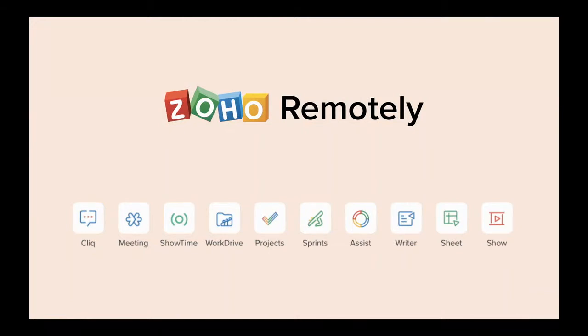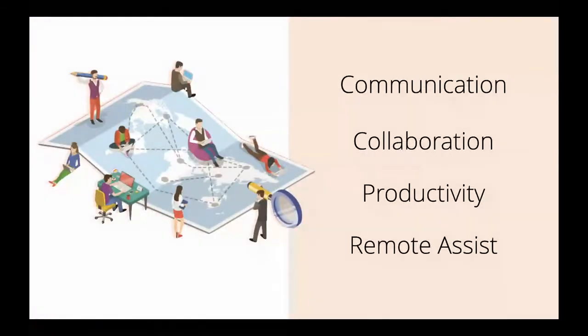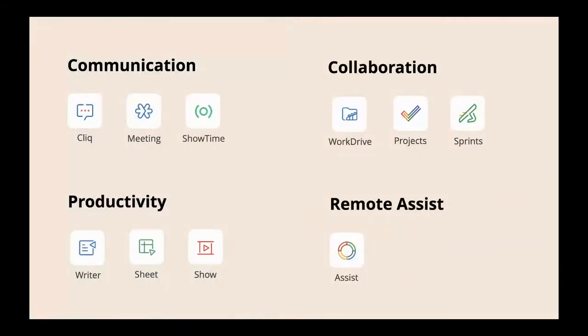These are the 10 applications included in Zoho Remotely, broken up into four categories: communication, collaboration, productivity and remote assistance. Within communication we have Cliq, Meeting and Showtime. Collaboration: WorkDrive, Projects and Sprints. Productivity: Writer, Sheet and Show. Remote assistance: Assist. Today I will be covering Cliq, Meeting and WorkDrive, and I'll show you a bit of Writer and Sheet.